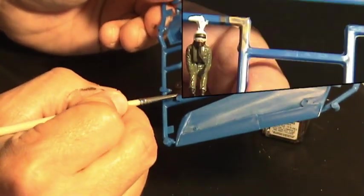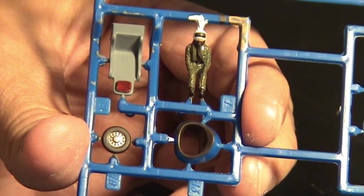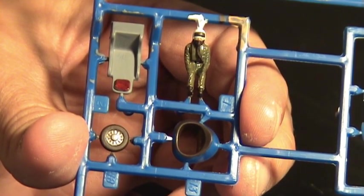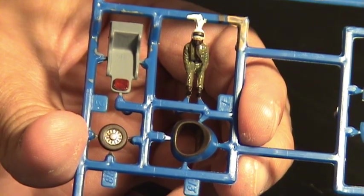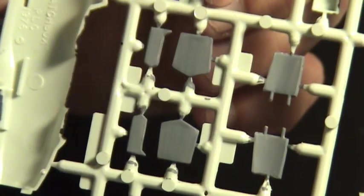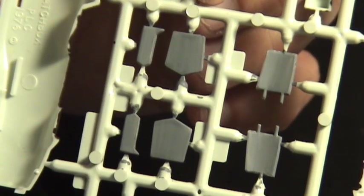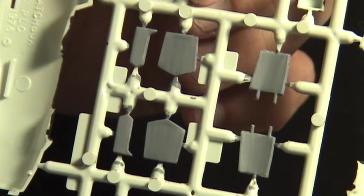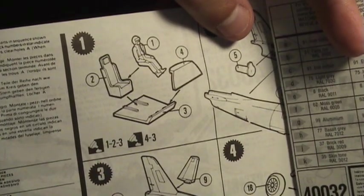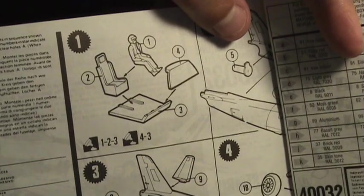We have painted the ejection seat, the pilot, the wheels, and the inside of the airplane nose. We have also painted the inside part of the landing gear wheel pans and the air brakes. We are now ready to start assembling the model.